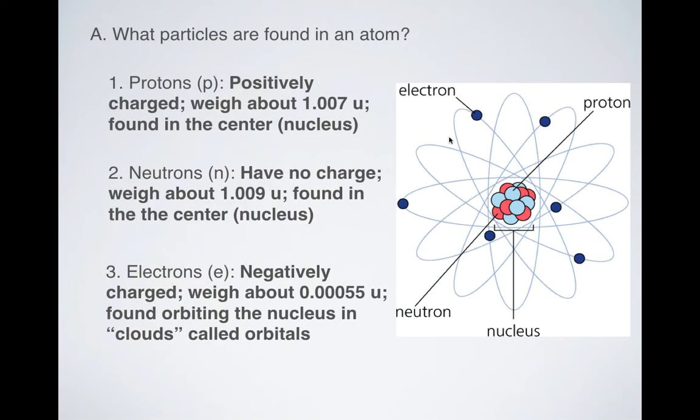What about these little guys, the electrons? So notice that the electrons in this picture are a lot smaller, but they would be significantly smaller. They're negatively charged. They only weigh about 0.00055 atomic mass units, and they're found orbiting the nucleus in what we call orbitals, or sometimes clouds. So that's what this is kind of representing here. These are representing orbitals.